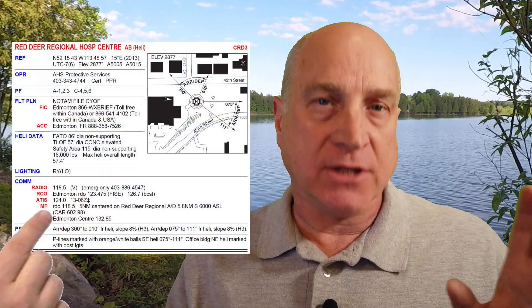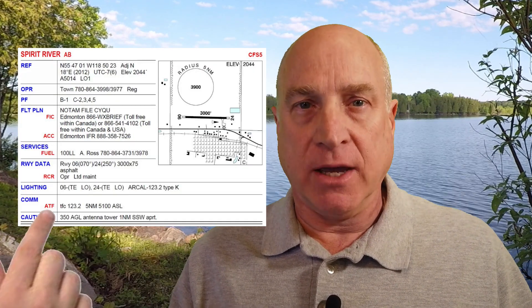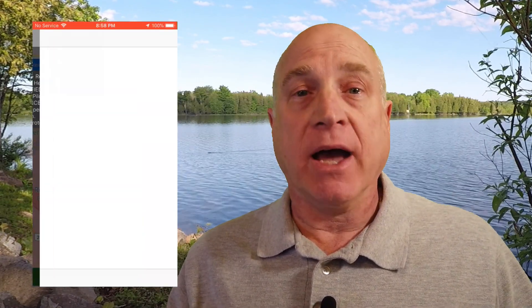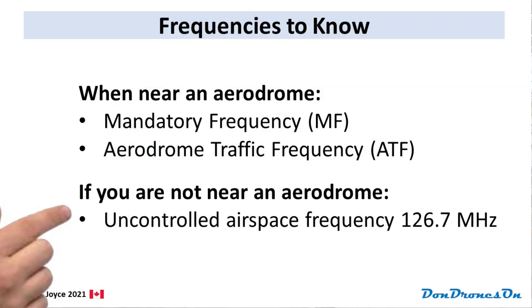Airport frequencies can be found in the CFS under the COM section of each aerodrome entry. The same information can be found using DronePilot Canada by tapping on an aerodrome, then tapping on the message to access the airport information in SkyVector. In SkyVector, radio communications are in the airport communications section. And if you're not near an airport, monitoring the uncontrolled airspace frequency of 126.7 would be a good choice.